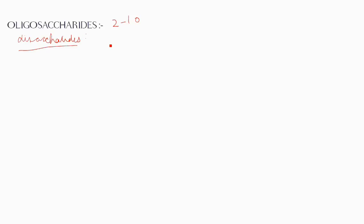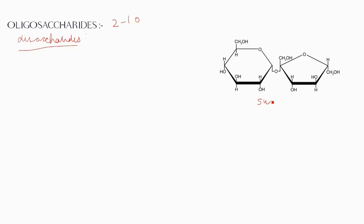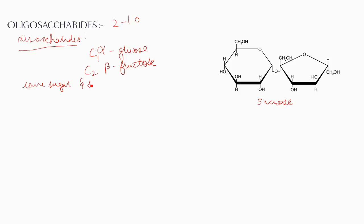A disaccharide is a carbohydrate formed by the condensation of two monosaccharides. One example is sucrose, which is made up of alpha-D-glucose and beta-D-fructose. The two monosaccharides are held together by a glycosidic bond between C1 of alpha-glucose and C2 of beta-fructose. Sucrose occurs in cane sugar and beet sugar and is the most commonly used table sugar.